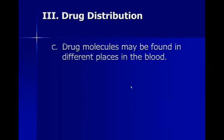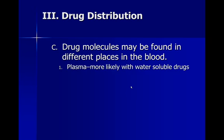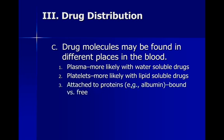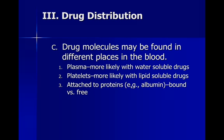Drugs are distributed through the blood and drug molecules can be found in different compartments. Plasma is where water-soluble drugs are likely to end up. Platelets, which are responsible for blood clotting, are more likely to accumulate lipid-soluble drugs. Drugs can also attach to proteins like albumin, making them what we call a bound drug. For example, testosterone has both a bound and a free version, and they have different effects depending on which form it's in.